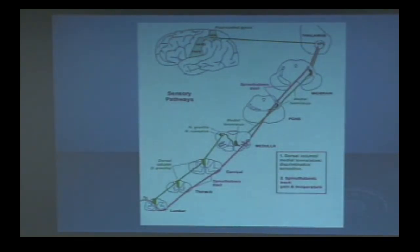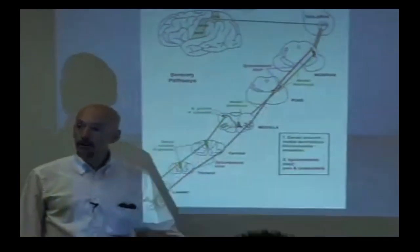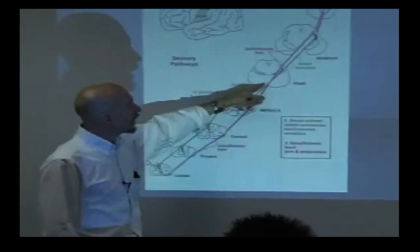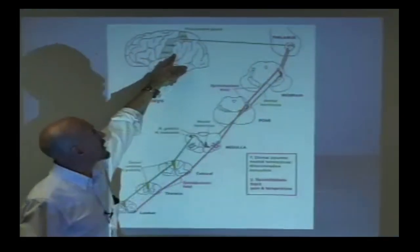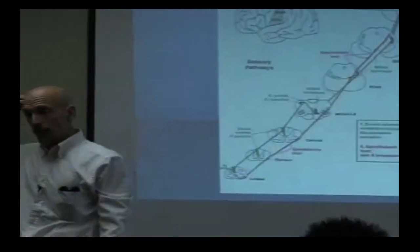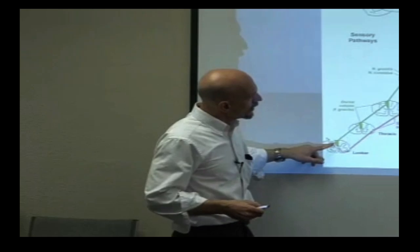Most neurological pathways are named either where they're coming from, where they're going to, or their anatomical location. The medial lemniscus is medial to—guess what—the lateral lemniscus, which is for hearing. It comes up to the brain, goes to the thalamus, and then out to the parietal lobe in the postcentral gyrus area.